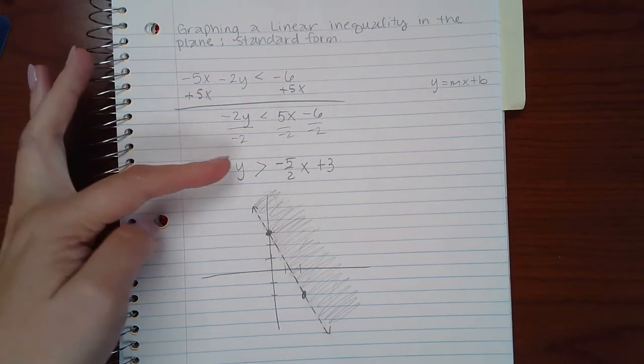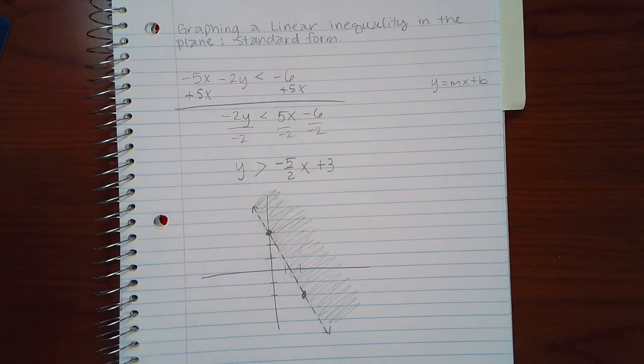And if you have it in standard form, you just make it look like point-slope form and you can graph it the same way you did when you were doing it with point-slope form.